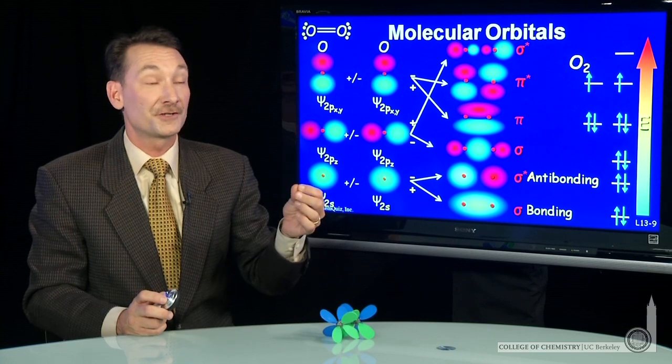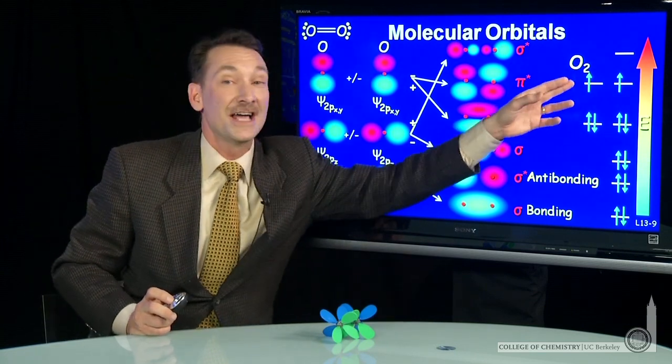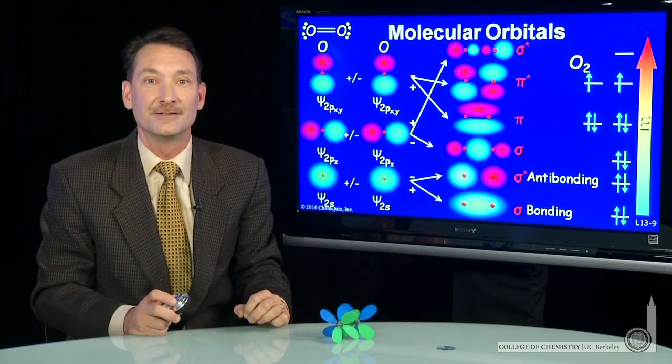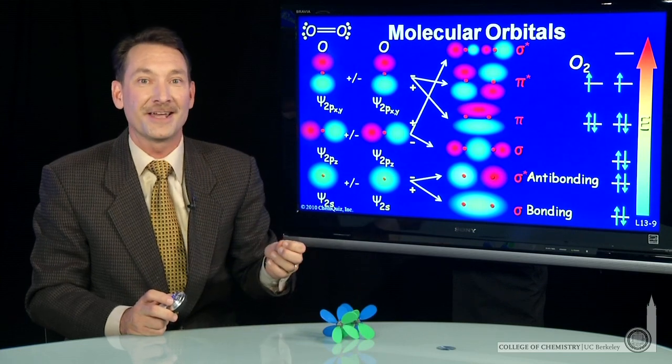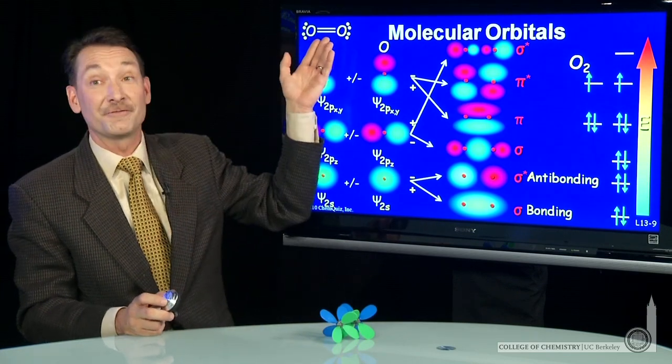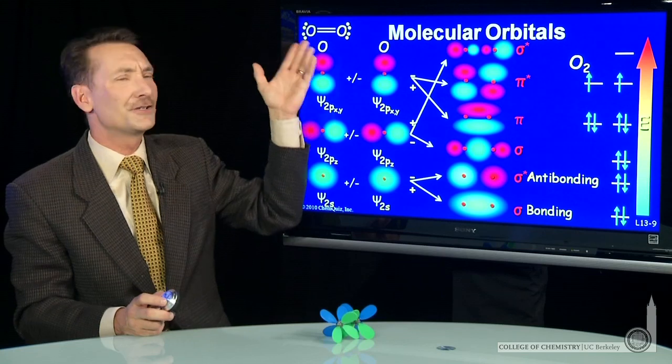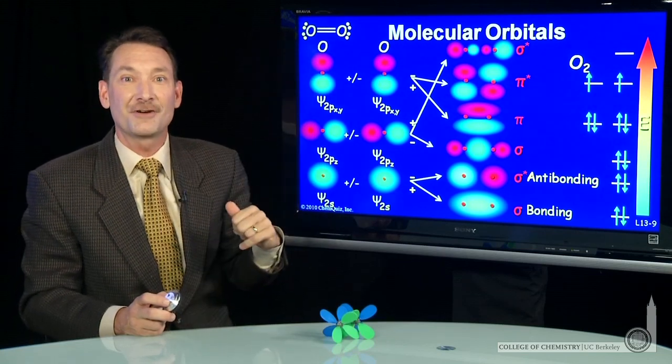But here's something that the Lewis dot structure didn't predict. Oxygen has two unpaired electrons. Oxygen is paramagnetic. Now we never would have got that from the Lewis electron dot structure. Everything looks paired up and neat in the electron dot structure.